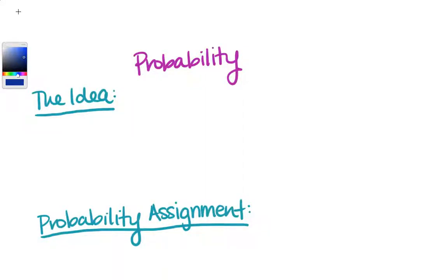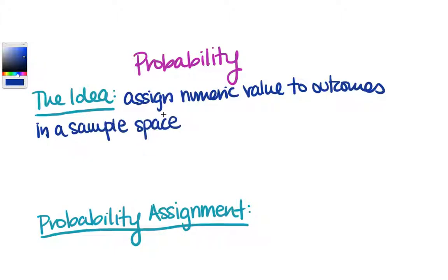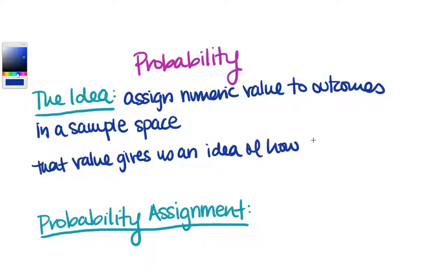Today we're going to be talking about probability, and let's first just talk about the idea behind probability. In previous sections you've talked about probability experiments like rolling dice or drawing cards or shooting free throws, and you've talked about sample spaces — every possible outcome. The idea in probability is that we assign a numeric value to outcomes in a sample space, and what we're trying to do is quantify likelihood. That numeric value gives us an idea of how likely that outcome is.